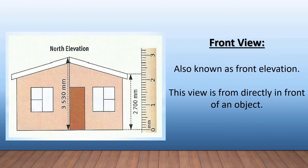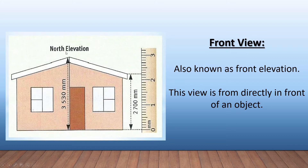Then we have front views. This is when we start talking about the elevation of a particular drawing. Here we can see a normal little house and this is the north elevation. The front view is known as the front elevation — you are standing looking at the front of the house. In South Africa, most houses are built facing north so they can get the warmth of the sun. Whether they say north elevation or front view, that should be the front of the house — here we can see the windows and the door.